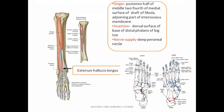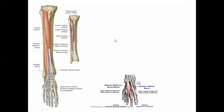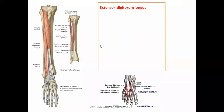All the muscles in this area are supplied by the deep peroneal nerve. The next muscle is extensor digitorum longus. As the name suggests, it causes extension of the digits and is a long muscle, comparable to the flexor digitorum longus or extensor digitorum longus of the upper limb, wherein those muscles divide into four tendons — this muscle similarly divides into four tendons for the lateral four toes.